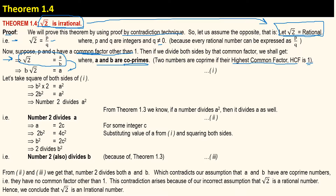If we simplify this equation, we get b multiplied by square root of 2 is equal to a — let's call this equation number 1. Now squaring both sides, we get 2b² is equal to a², which implies that 2 divides a².